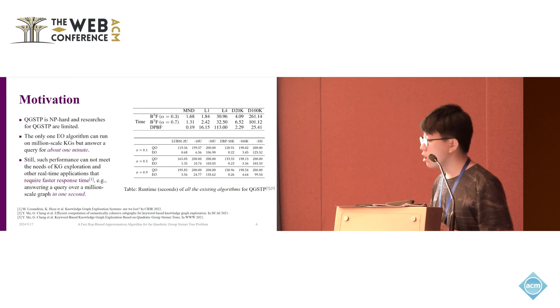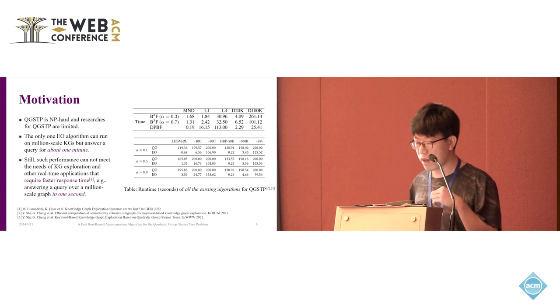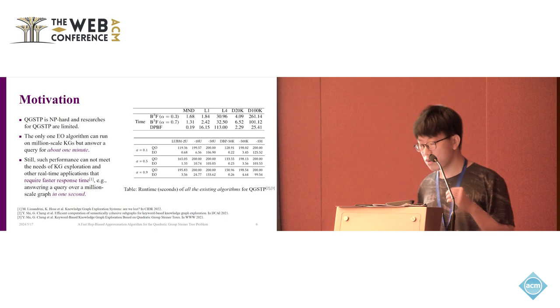However, QGSTP is NP-hard and research for QGST is limited. EODEC can run on the million-scale KGs, and it still answers a query on the large-scale knowledge graph in about one minute. Such performance cannot meet the needs of KG exploration or other real-time applications, which require faster response time. So a fast algorithm for QGSTP is needed.